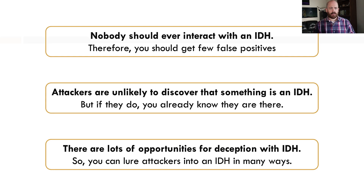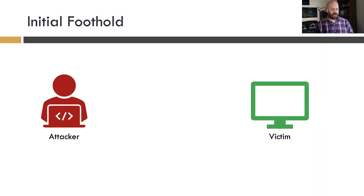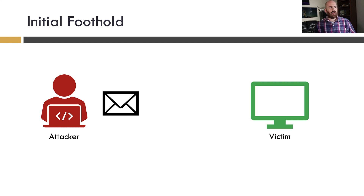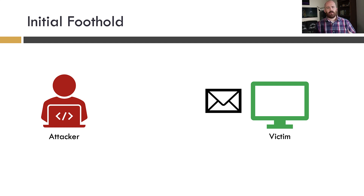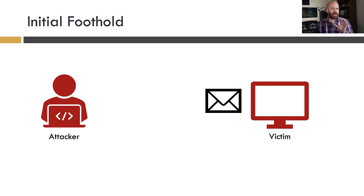Let's talk about some use cases, starting with a typical attack scenario. An attacker has to gain an initial foothold onto a victim system before they can further their attack. Consider the scenario where an attacker sends a malicious email with an attachment or link, the victim clicks it, runs a file, leading to code execution — and now the attacker has access to that victim machine and is in control of it. At this point, attackers will generally do at least one of three major things.